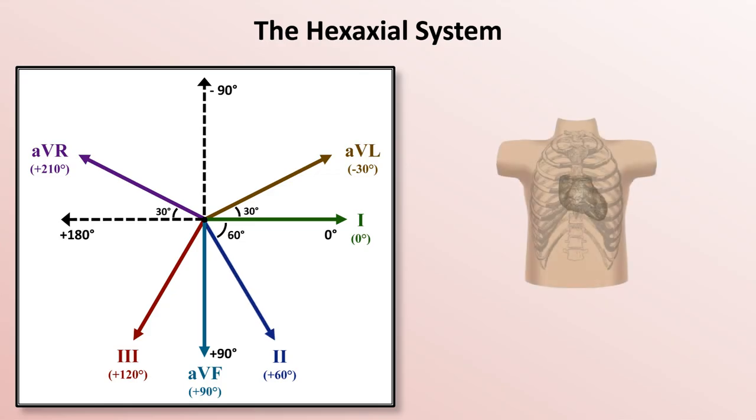During ventricular depolarization, the first major event is a left to right depolarization of the intraventricular septum. As viewed from the front of the patient, the wave of depolarization from this event is angled down and to the right.